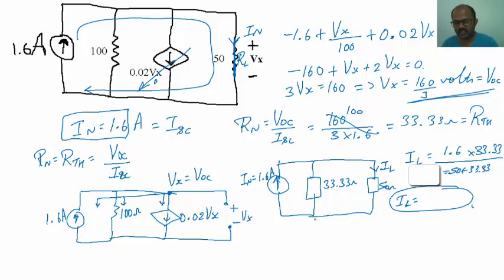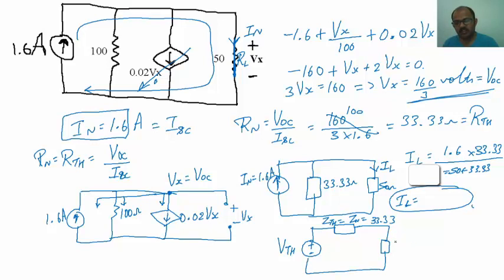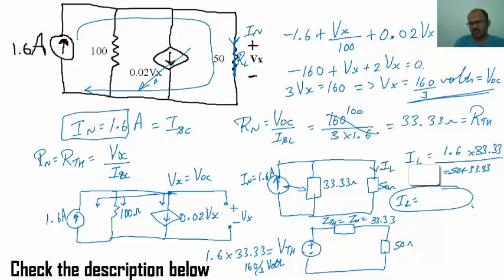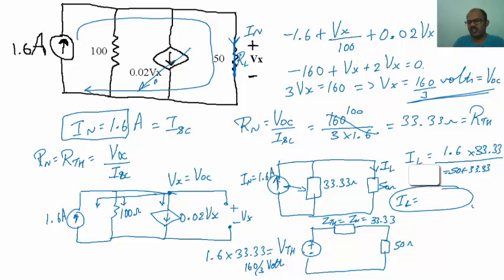From the Norton equivalent circuit, the Thevenin equivalent circuit can also be written: VTH in series with ZTH = 33.33 ohms and load resistance of 50 ohms. The Thevenin voltage VTH = IN × ZN = 1.6 × 33.33 = 160/3 volts. This matches the result obtained in the previous Thevenin's theorem video, confirming that both methods yield the same answer.